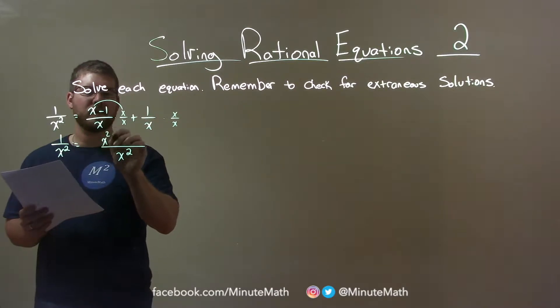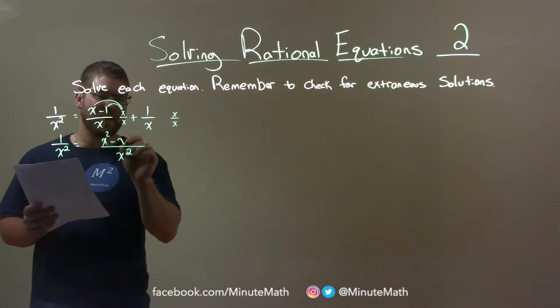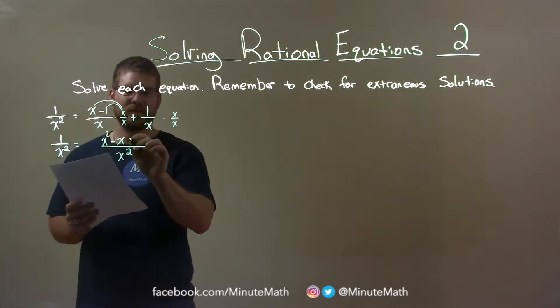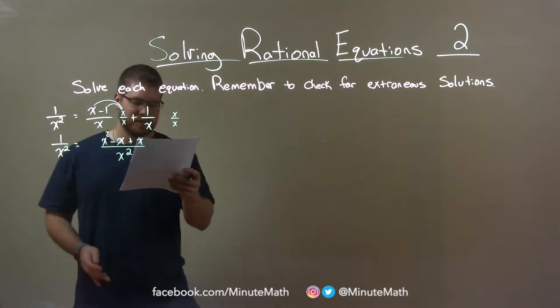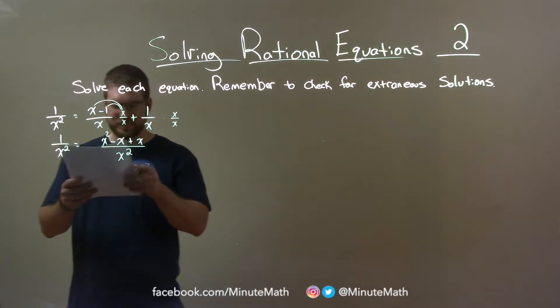x times x is x squared here. x times 1 is 1. So we have x minus x, and x times 1 is just x. So now we have x squared minus x plus x.